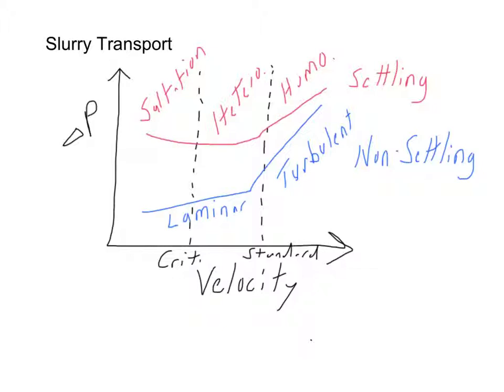At slower velocities, you end up with heterogeneous flow, which means you actually get some separation within the pipe of the larger particles and the smaller particles. And then at even slower velocities below the critical velocity, we end up in the saltation regime. In the saltation regime, we now have particles that begin to roll and slide across the bottom of a pipe.